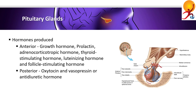ACTH stimulates the cortical portion of the adrenal gland to produce and secrete cortical hormones called glucocorticoids. TSH stimulates the activity of the thyroid gland, increasing production and secretion of its hormones T3 and T4. FSH is a gonadotropic hormone that acts on ovaries to induce the growth of follicles, and in men stimulates spermatogenesis.